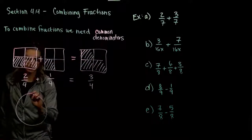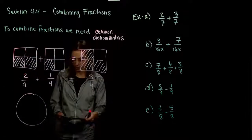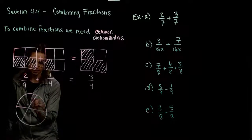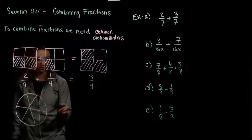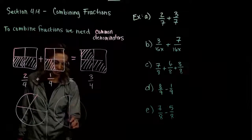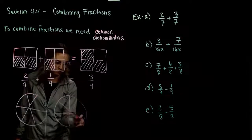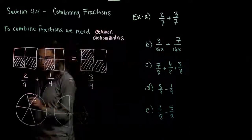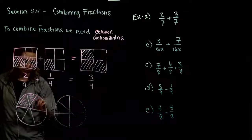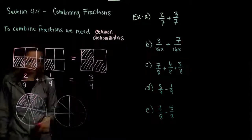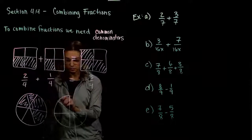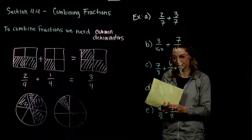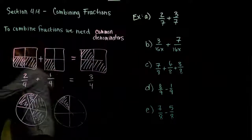For example, we could take a circle as our unit shape and divide it into six different pieces. We'll draw that twice — same shape divided into the same number of units if we're combining them together. In the first one, let's shade in one, two, three, four of those regions. And then the next one, let's have one.